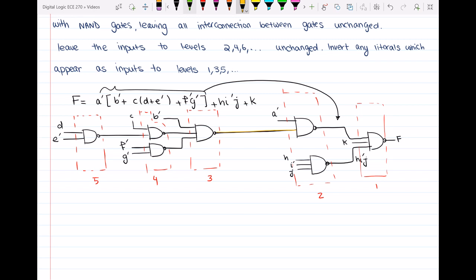Then it says that go ahead and leave the inputs to levels two, four, and six, and so on and so forth. So the even levels unchanged. So we don't care about the inputs here. We don't care about inputs here. But it says that invert any literals which appear as inputs to level one, three, and five. So what I have to do, I have to go ahead and invert my inputs to level one, three, and five here.